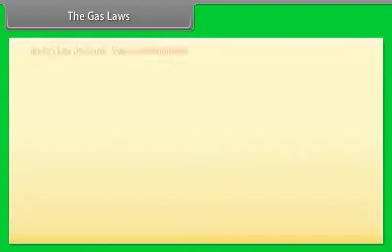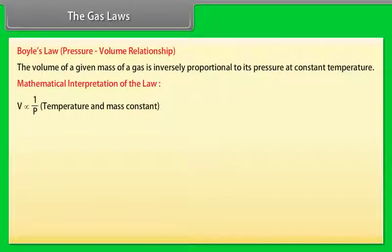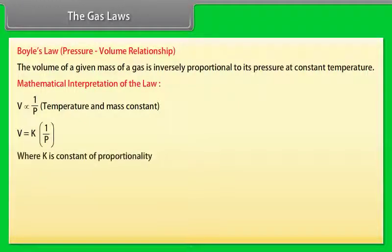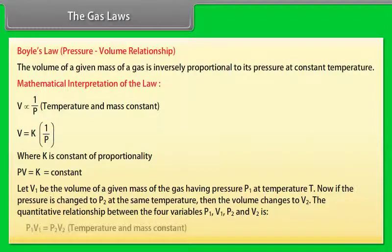Boyle's Law — Pressure-Volume Relationship: the volume of a given mass of a gas is inversely proportional to its pressure at constant temperature. Mathematically, V ∝ 1/P at constant temperature and mass; V = K(1/P); PV = K = constant. Let V₁ be the volume of a given mass of gas having pressure P₁ at temperature T. If the pressure is changed to P₂ at the same temperature, the volume changes to V₂. The quantitative relationship is P₁V₁ = P₂V₂ at constant temperature and mass.